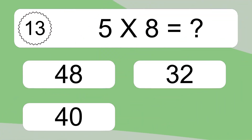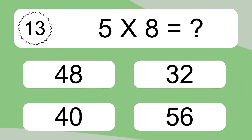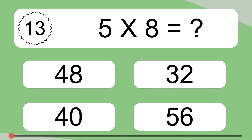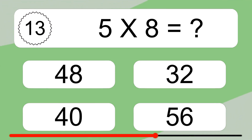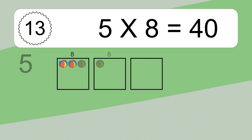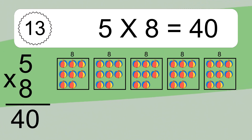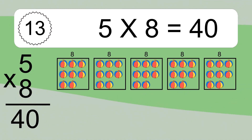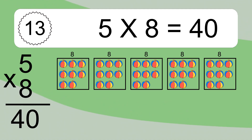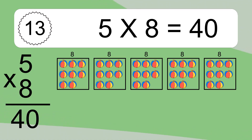5 times 8 equals what? 5 times 8 equals 40. We have 5 boxes, and each box has 8 colorful balls inside. If you count all the balls in all the boxes together, you will have 5 times 8 balls. This equals 40 balls.